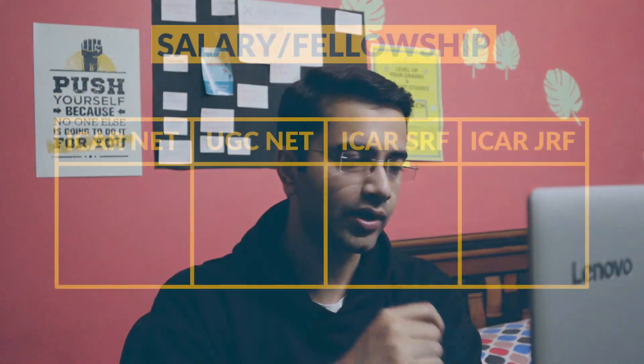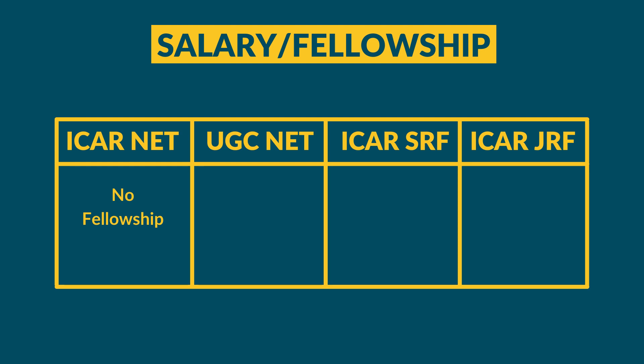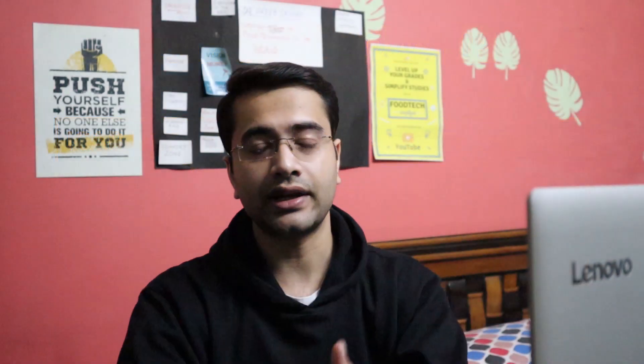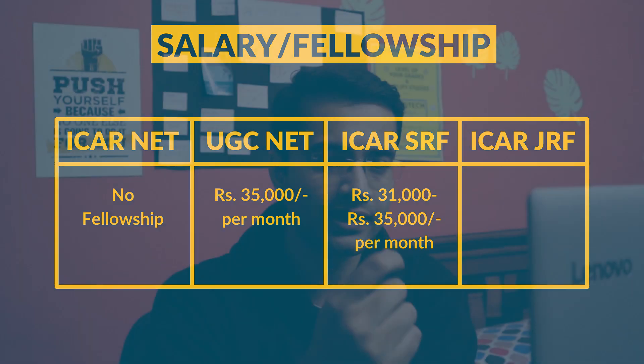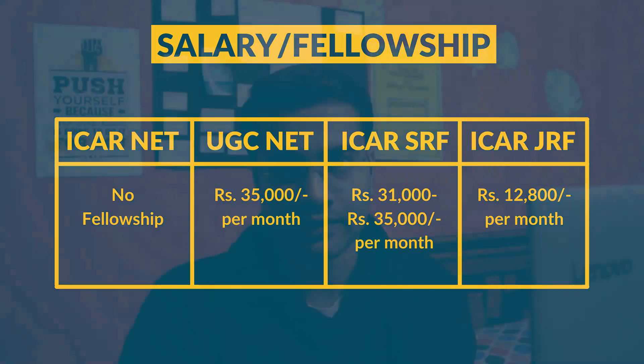For ICER-NET, you do not get any fellowship or stipend from ICER. You may get something from the college where you're pursuing a PhD, but not from ICER. For UGC-NET home science, if you qualify and pursue a PhD, you get Rs. 35,000 per month. For ICER-SRF, you get a stipend ranging from Rs. 31,000 to Rs. 35,000 per month. For ICER-JRF, since the candidate is a graduate pursuing a master's, they receive Rs. 12,800 per month.